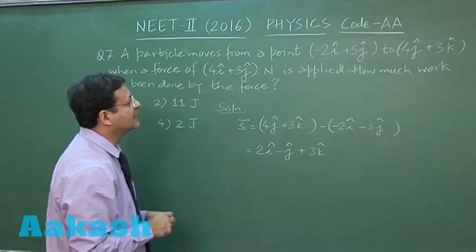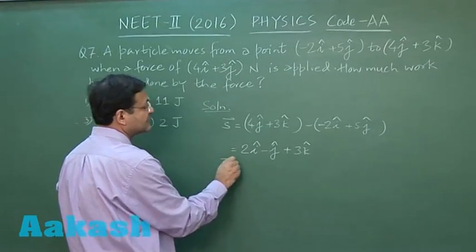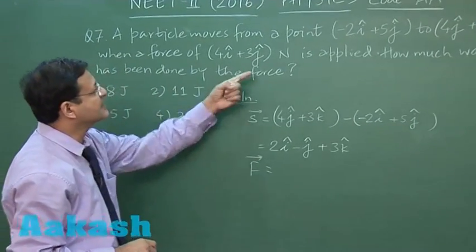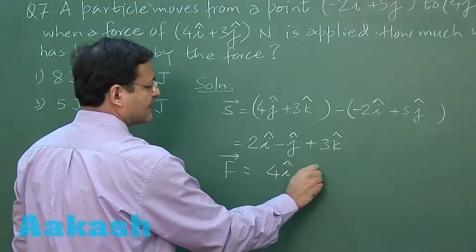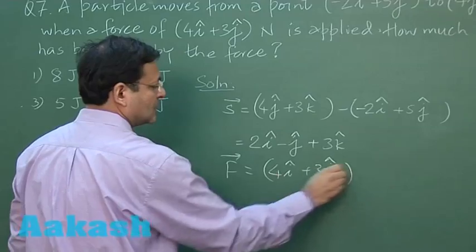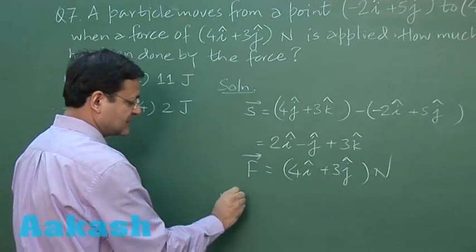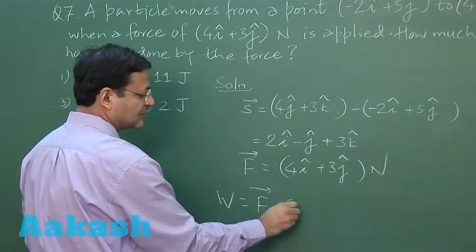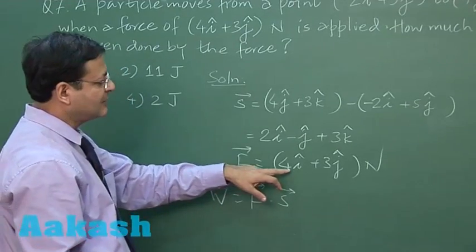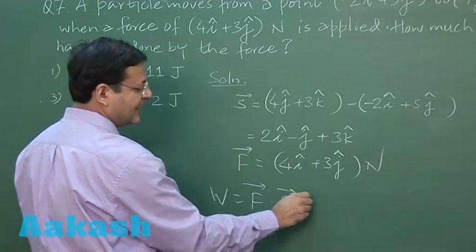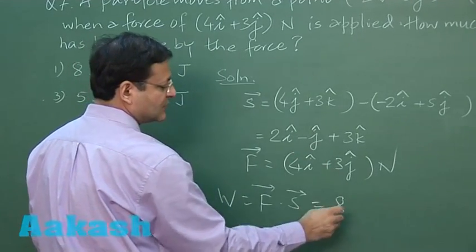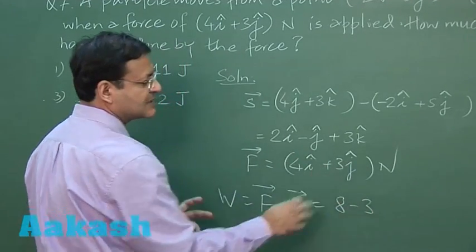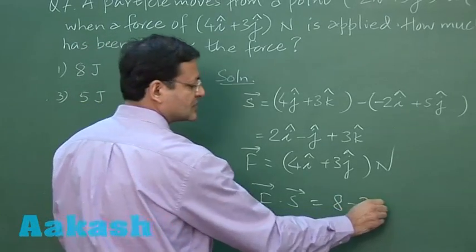This is the calculated displacement, and force vector has been given as (4i + 3j) newton. Now you know that work done is F dot S, so you have to calculate the dot product. i cap multiplied by i cap: 4 times 2 is 8. And j cap to j cap: this is +3 times -1, which is -3. k cap is absent, so that is 0. This equals 5 joules.